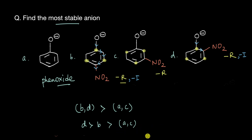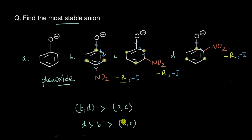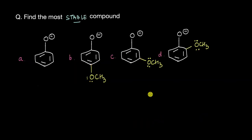What about A versus C? Even though NO2 at meta cannot remove the negative charge via resonance, it still shows an inductive effect and removes some negative charge via induction. So C is more stable compared to A (phenoxide). Since inductive effects are weaker than resonance, the ultimate stability order is D > B > C > A.